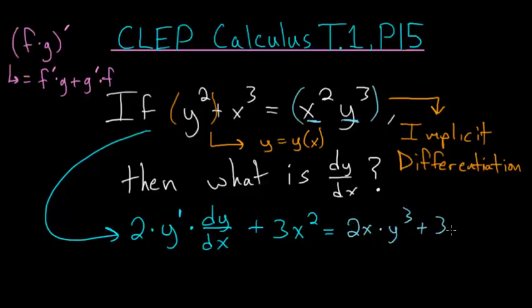We'll bring the 3 down in front, the inner function stays the same, and we subtract 1 from the exponent, giving us 3y squared multiplied by the derivative of y with respect to x. Then we just multiply by the function x squared.